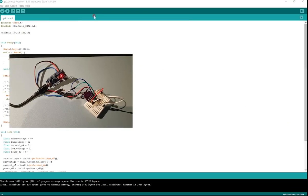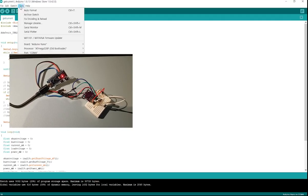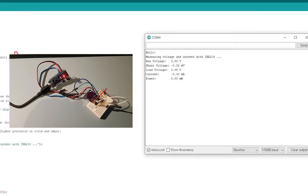After uploading the image, click Serial Monitor under Tools, and you can see the measurement result printed every 2 seconds.